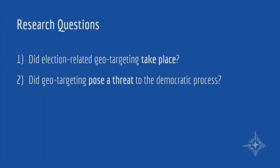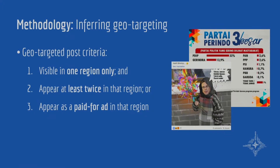Our research aimed to answer two questions. First, did geotargeting occur in Finland and Indonesia? And if so, did geotargeting pose a threat to the democratic process in either country? The core problem of this study was to infer what content was being targeted to certain audiences in specific areas. We assumed that geotargeted content would contain two of three characteristics: it would be visible in one region and not others, appear twice or more in that region denoting the popularity of that post, or appear as a paid-for ad, explaining why it is in the dataset.